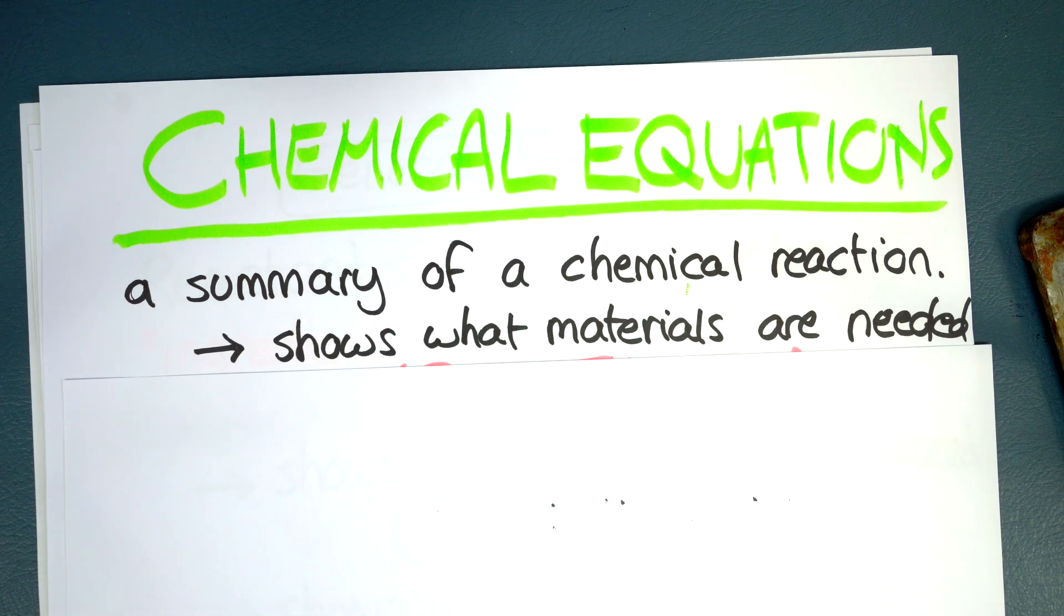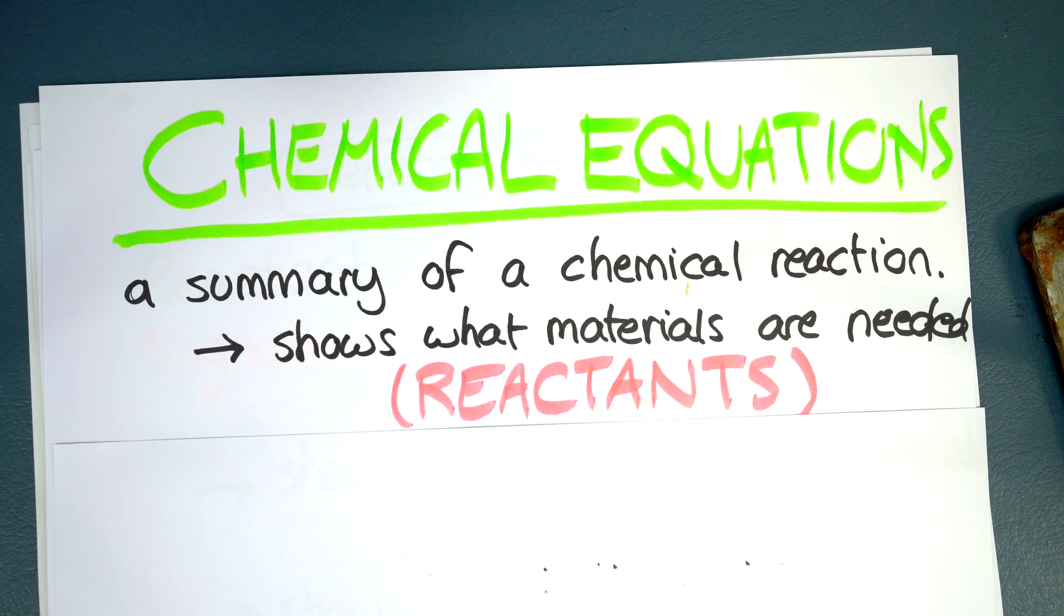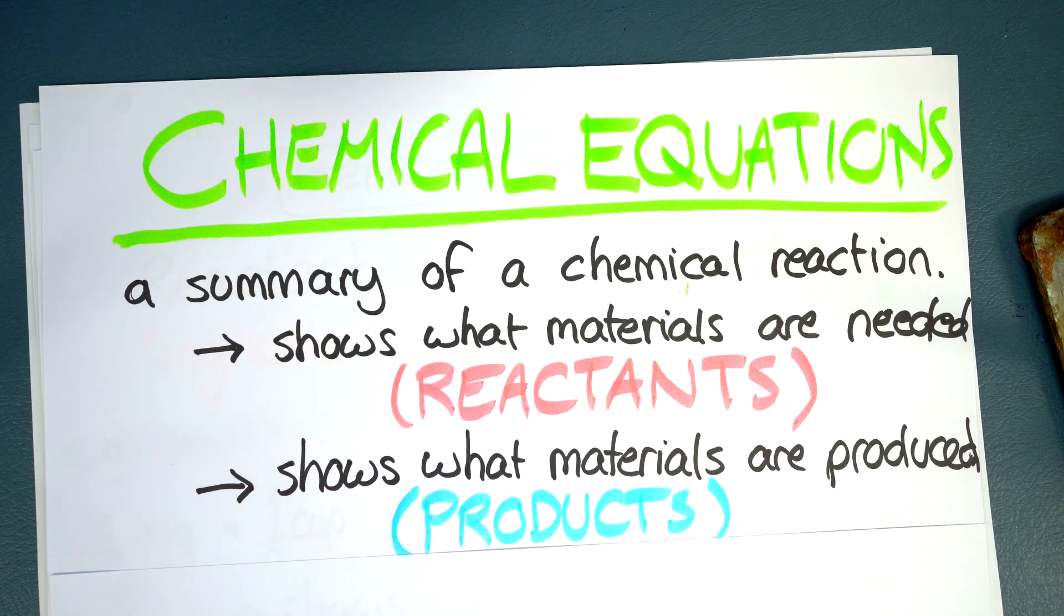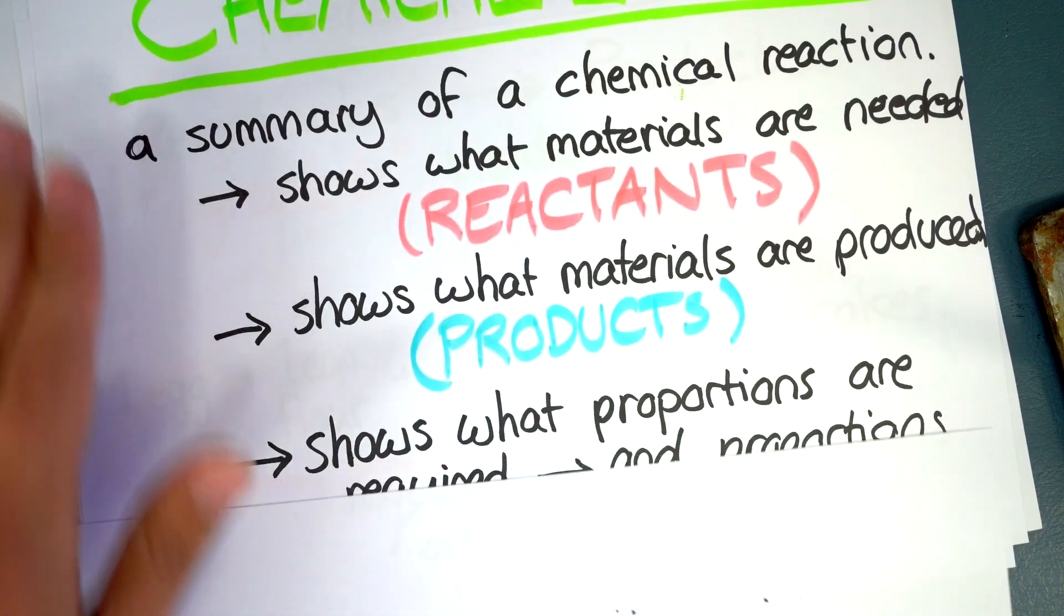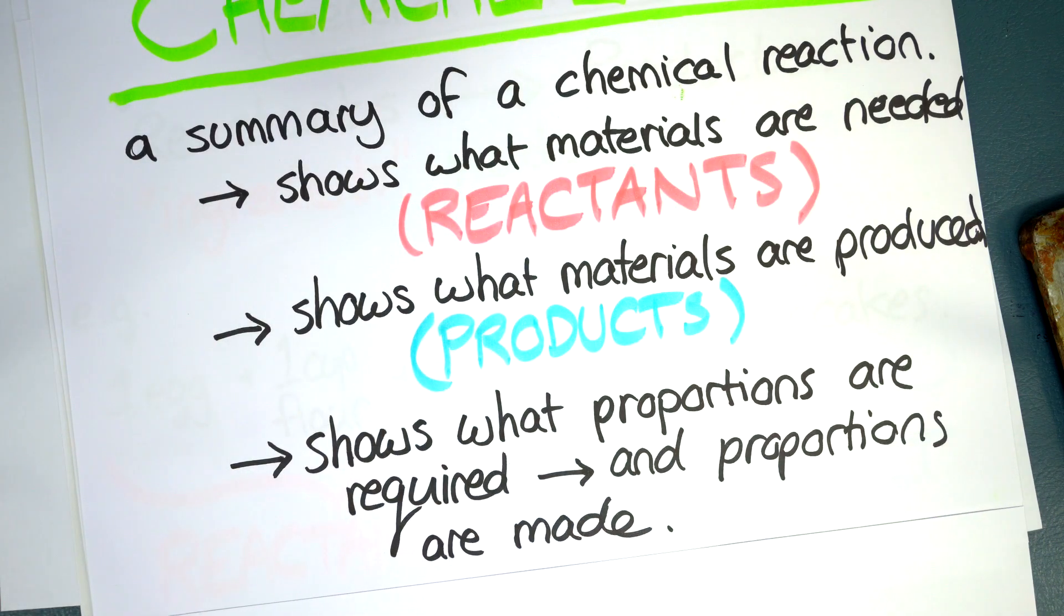It shows you what materials are needed, these are called reactants, and also shows you what materials are produced and they are called the products. And lastly the other bits of information that it can indicate is what proportions are required and what proportions of the products will be made.